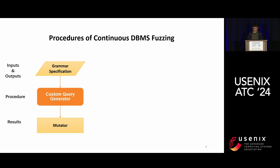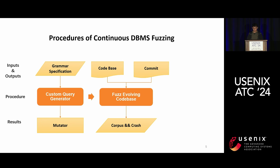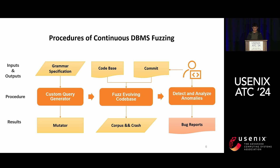The basic process of continuous DBMS fuzzing has three steps. The first step is to customize the query generator for the target DBMS, ensuring generated queries exhibit both syntactic and semantic correctness. Any invalid input will be rejected, and this step typically involves reading grammar specifications and outputting a custom SQL mutator. The second step is continuous fuzzing on evolving code; the codebase of an enterprise-level DBMS continuously evolves, and committed code changes undergo rigorous testing and validation, with output being hangs and crashes.